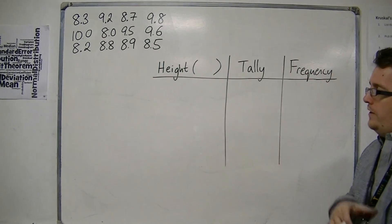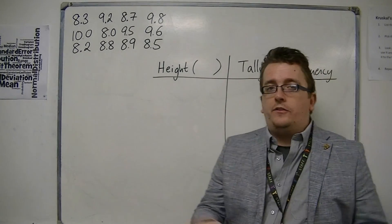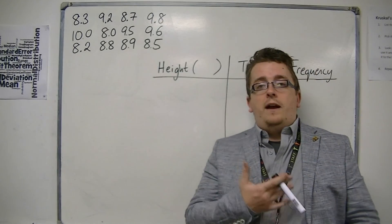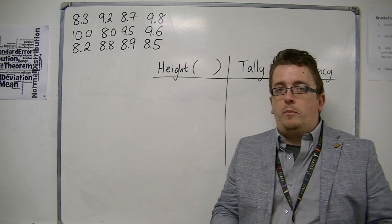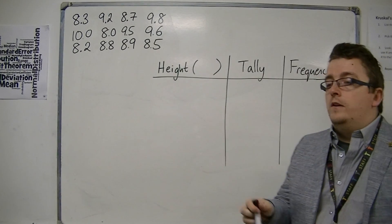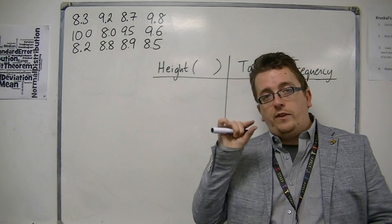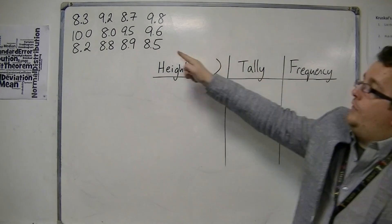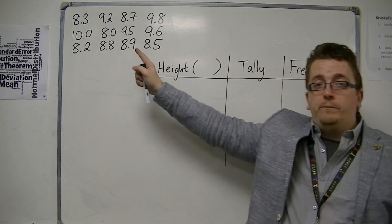Now, in this example, we're going to be looking at some heights. Height is generally a continuous variable because you can measure height into increasing levels of accuracy. Let's say these are the heights in metres of some tall trees.